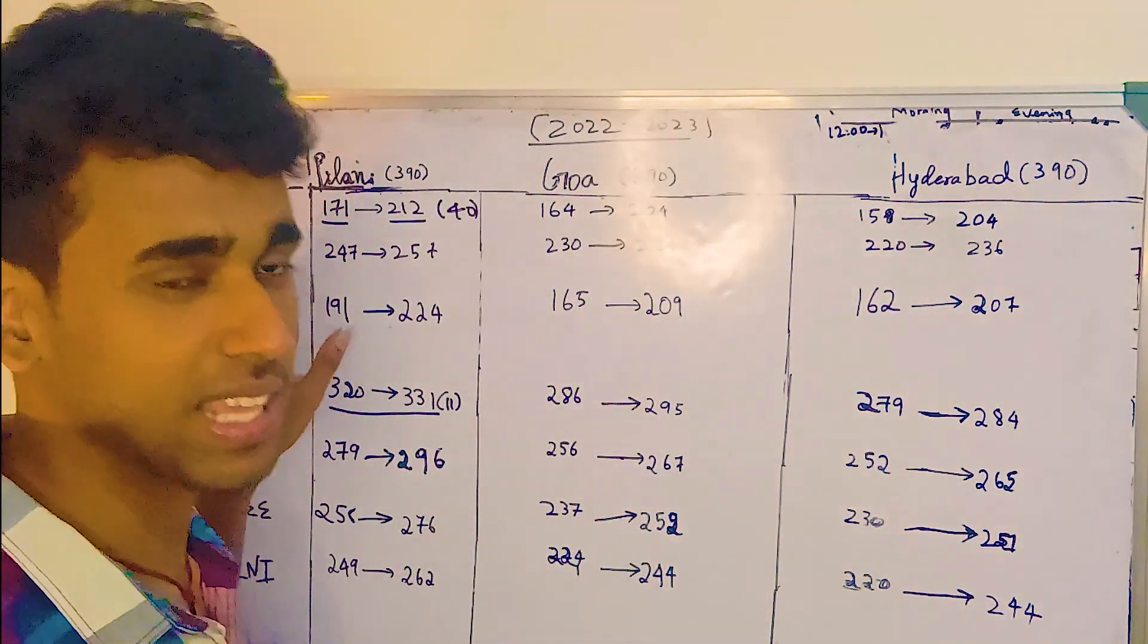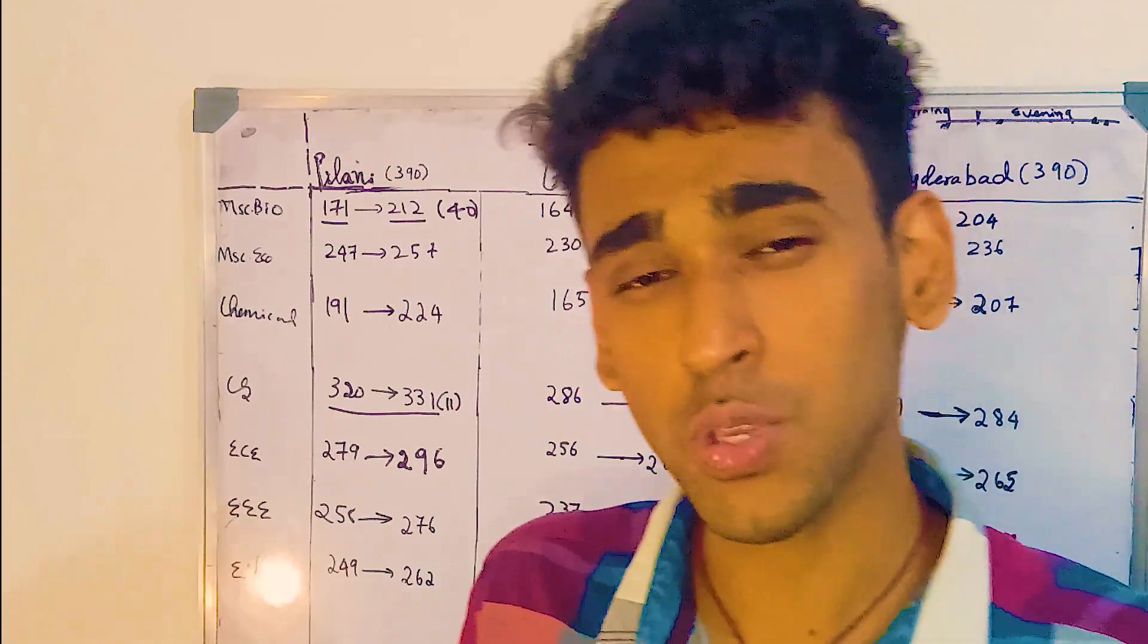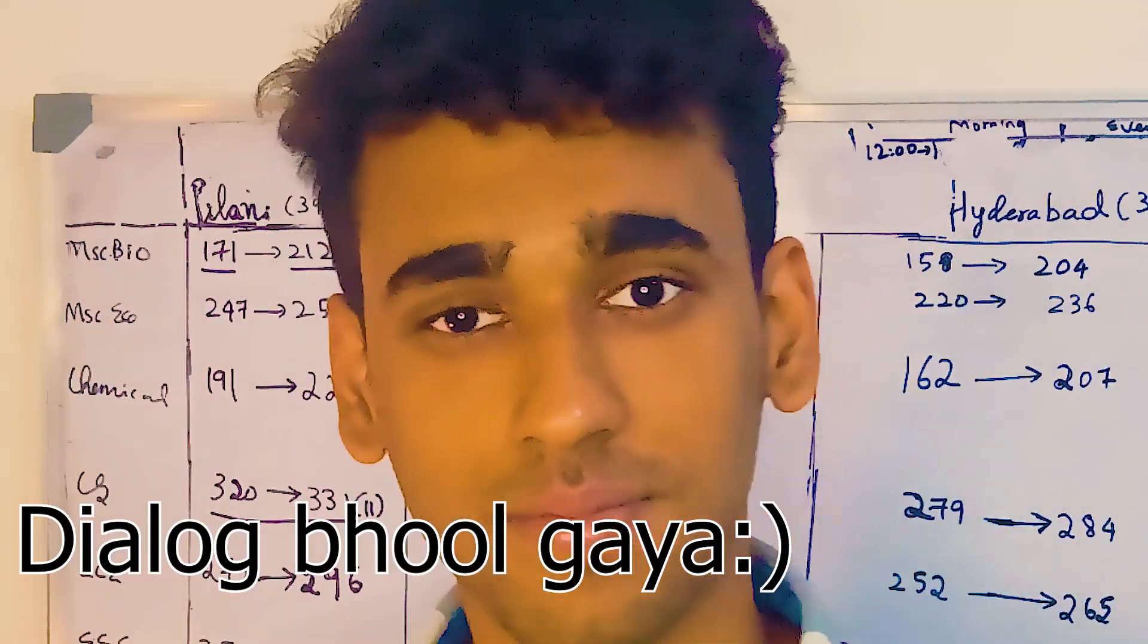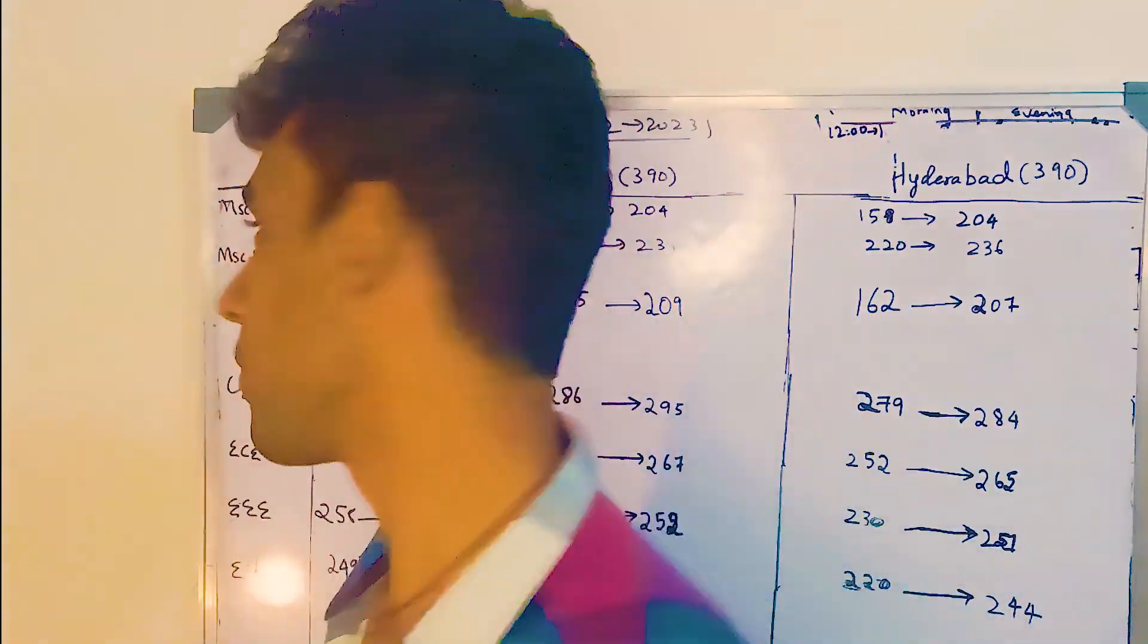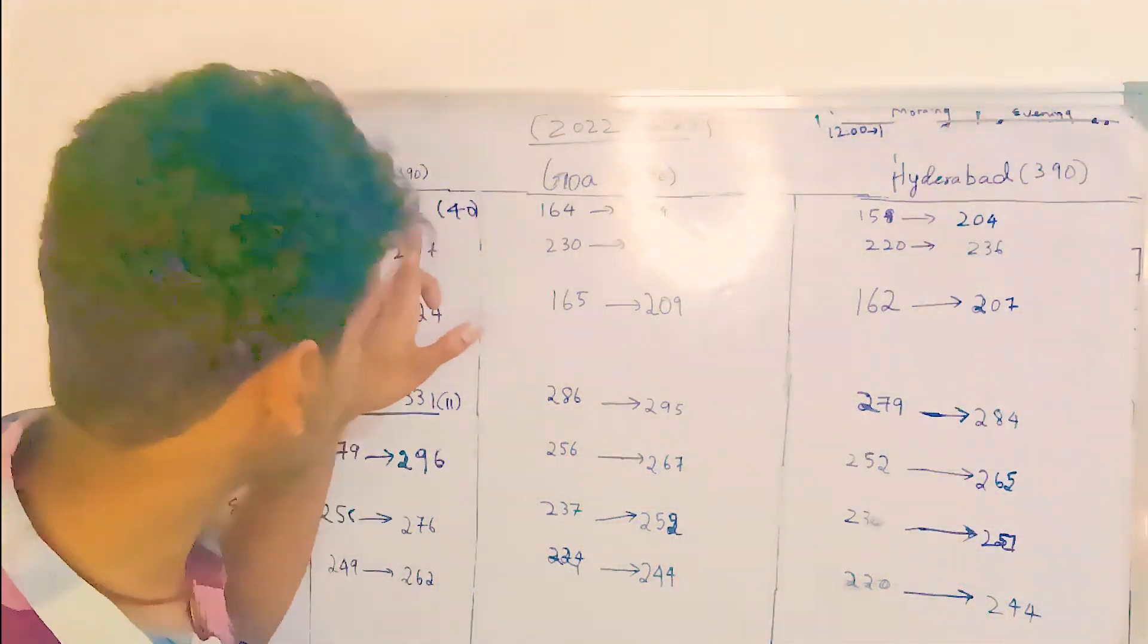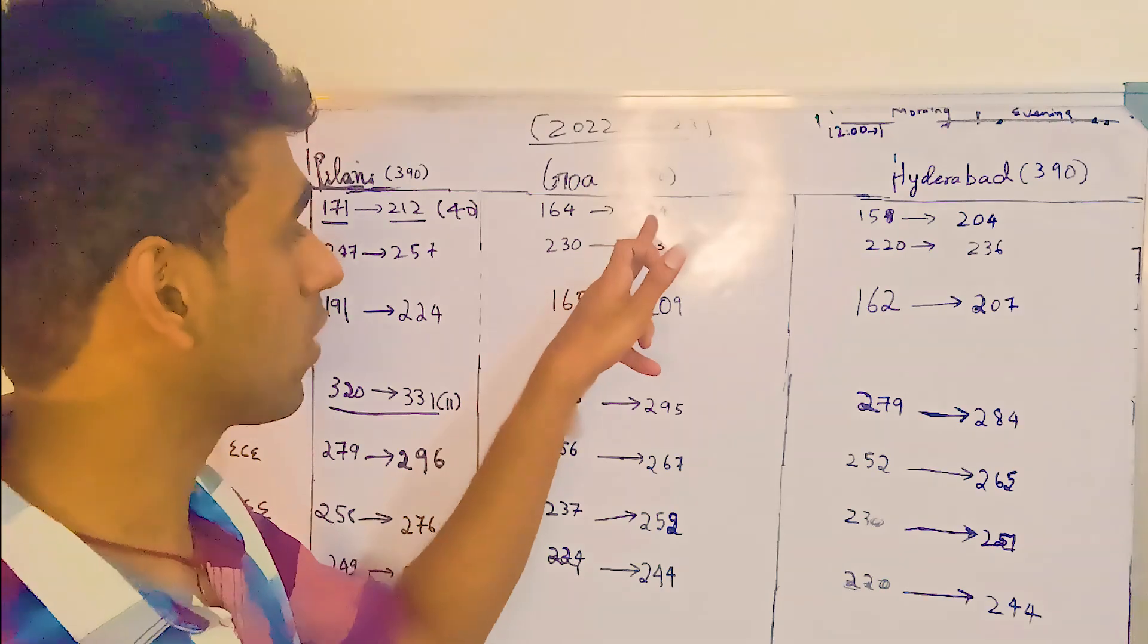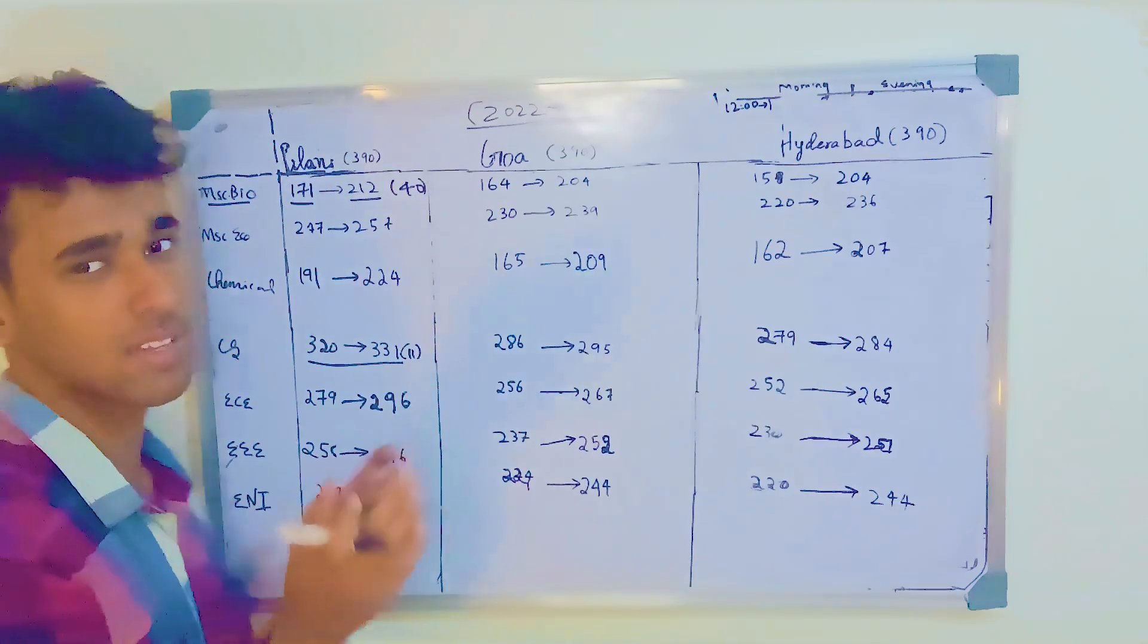We'll start with MSc Bio and MSc Eco. There's a dual degree program in BITS. You can pick any science major, and in your second year, based on your CGPA in first year, you'll be able to take your engineering degree as well. For MSc Bio, even if you had 171 marks in 2022, you would get through. In 2023, you need 212. Similarly, MSc Bio in Goa, you need 164 in 2022 and 204 in 2023.